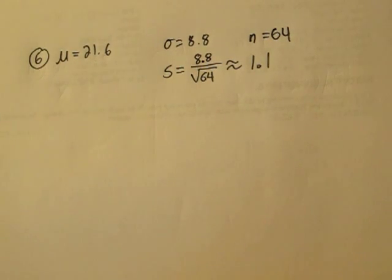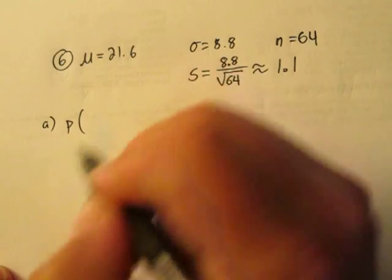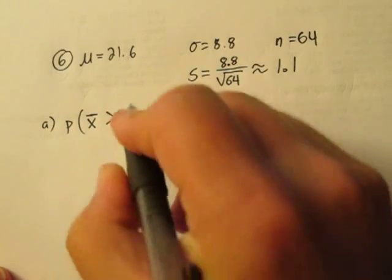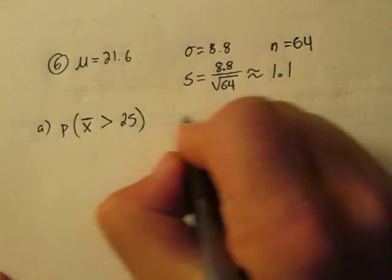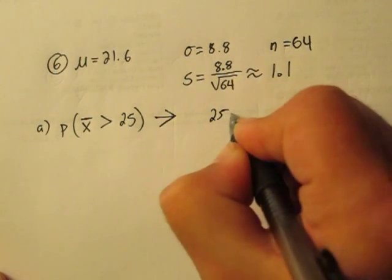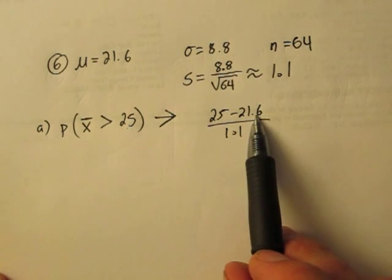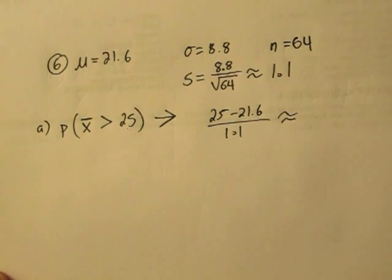The first one is find the probability our sample mean is more than 25. So we can convert that to a z-score. So there's the 25. Here's our population mean and our sample standard deviation. And it's a fairly large z-score, 3.1.